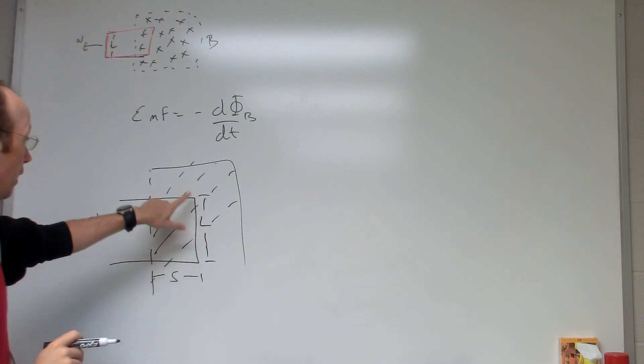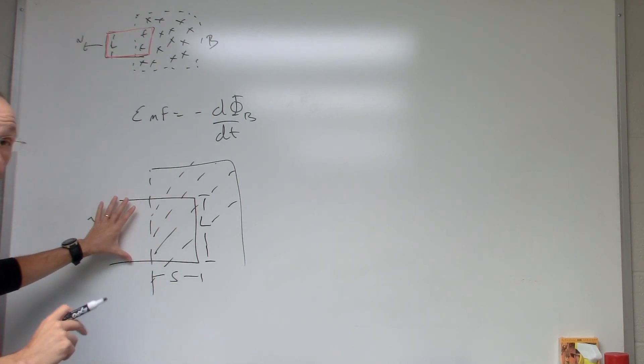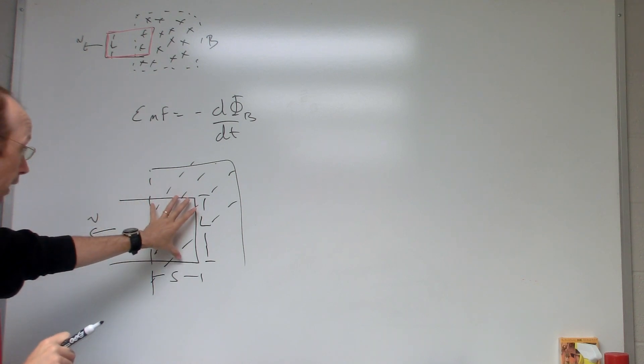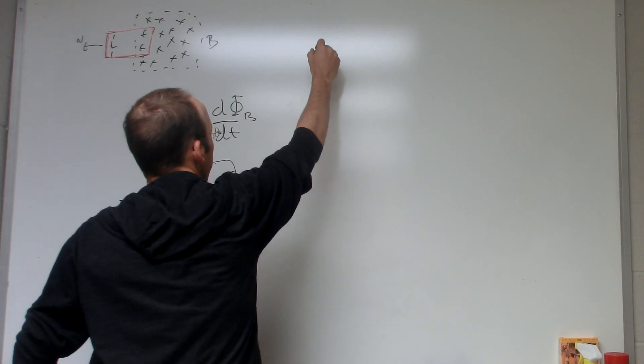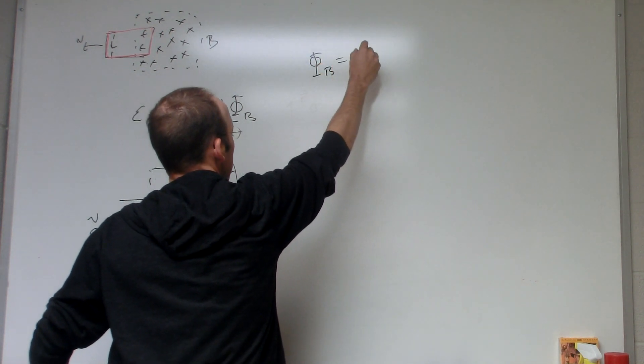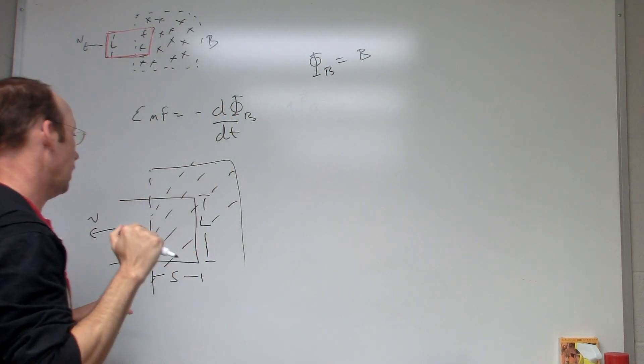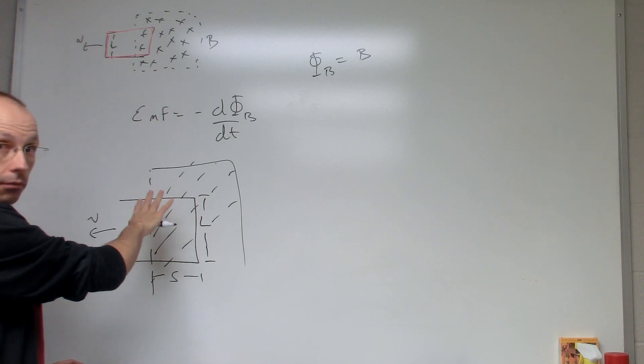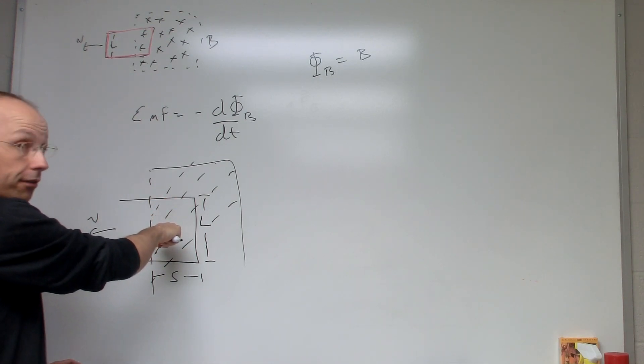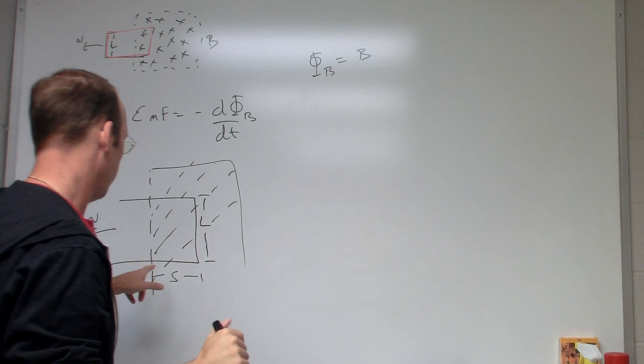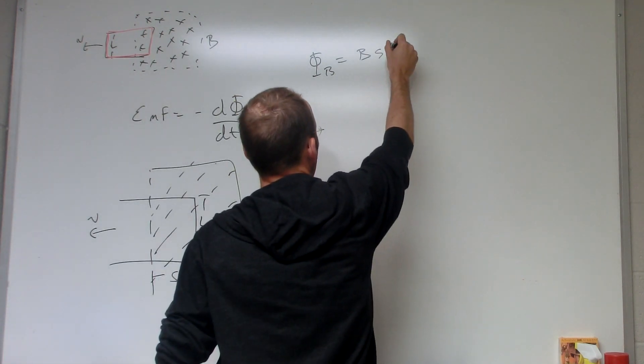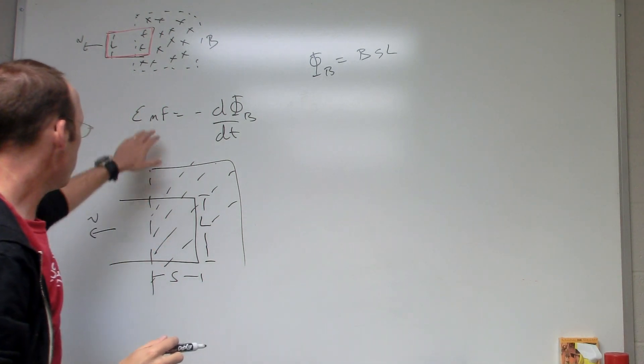And this whole thing's moving with the speed V that way. So there's no flux through this region because there's no magnetic field. So I only have flux in this region. So at this particular instance, flux Φ_B is going to be B, the magnetic field, times this area. The normal vector to this area is in the same direction as the magnetic field, so I don't have a cosine term in there. So I just get s times L.